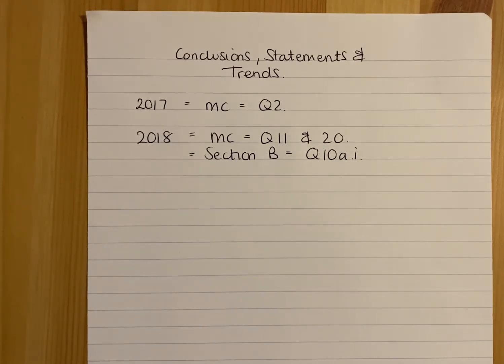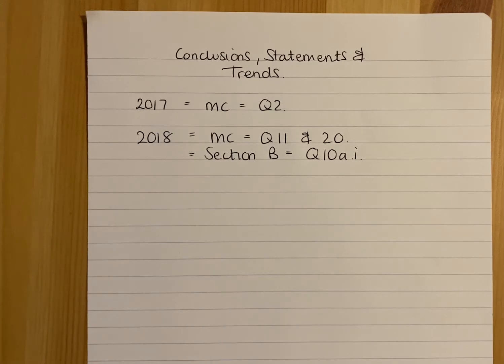The first one I'm going to do will be 2017 multiple choice question 2, and then I'll focus on the 2018 paper with two multiple choice questions — 11 and 20 — and then question 10A part 1 from section B of 2018.